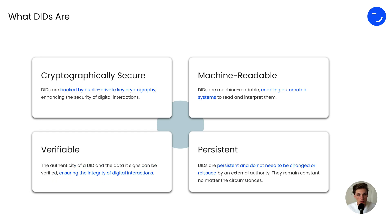They are cryptographically secure, so they are backed by public and private key cryptography, enhancing security and digital interactions. They are machine-readable, enabling automated systems. They are verifiable, as the authenticity of DIDs and the data they sign can be verified, ensuring integrity of digital interactions.